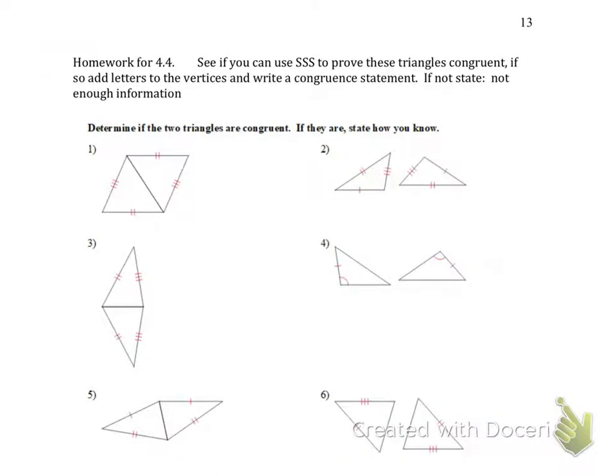So here you have the homework. I'm going to do the first two with you and then you're going to finish this for homework. See if you can use side-side-side to prove these triangles congruent. Then if you can, add letters to the vertices and write a congruent statement. If not, say not enough information. I'm going to do the first two with you. I see that I have sides labeled with two hash marks, inside with three hash marks, and I see that I have a common side which I'm going to label with one hash mark. I do indeed have two congruent triangles because that common side has to be the same length each time they use it.